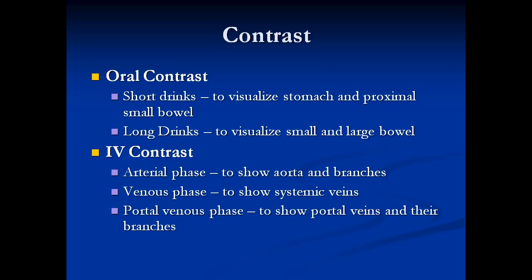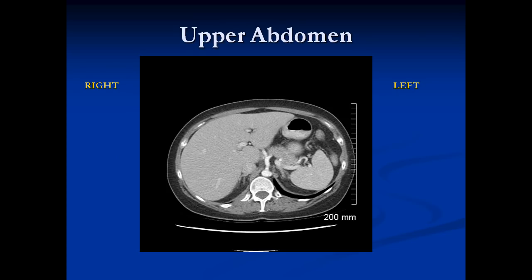We can catch the contrast within the abdomen in three separate phases: the arterial phase, to show the aorta and its branches; the venous phase, to show the systemic veins; and the portal venous phase, to show the portal veins and their branches. Depending on what's wrong with the patient, we prescribe exactly what the technologist should do before taking the image.